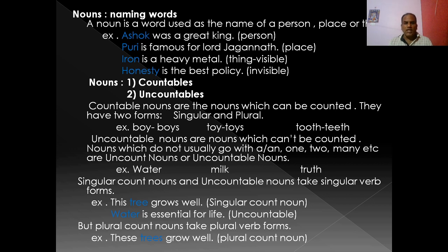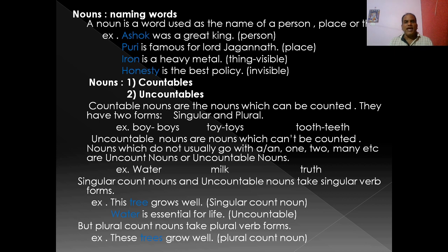Honesty is the best policy — honesty is here invisible. We can't see, we can't touch, but we can only feel. So this is also a noun. A noun is a word used as the name of a person, place or thing. So we can classify nouns into two: some of them are countables and others are uncountables.